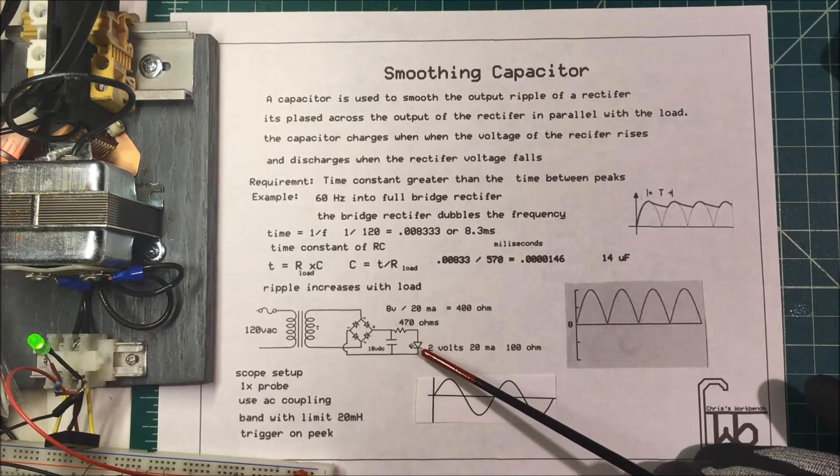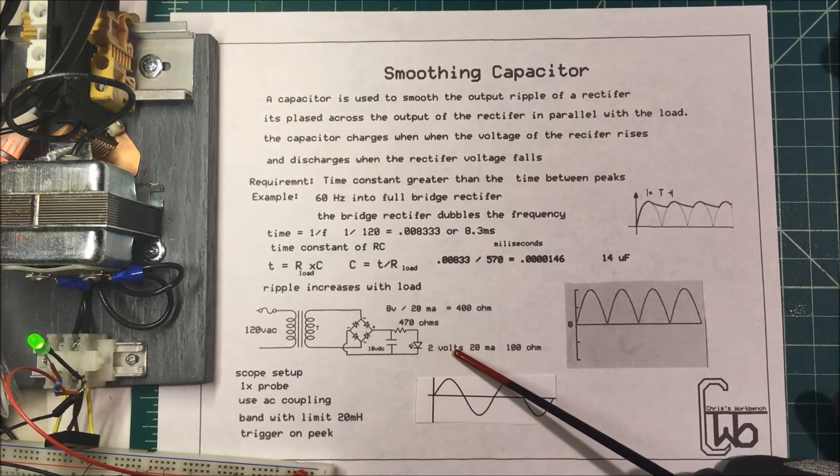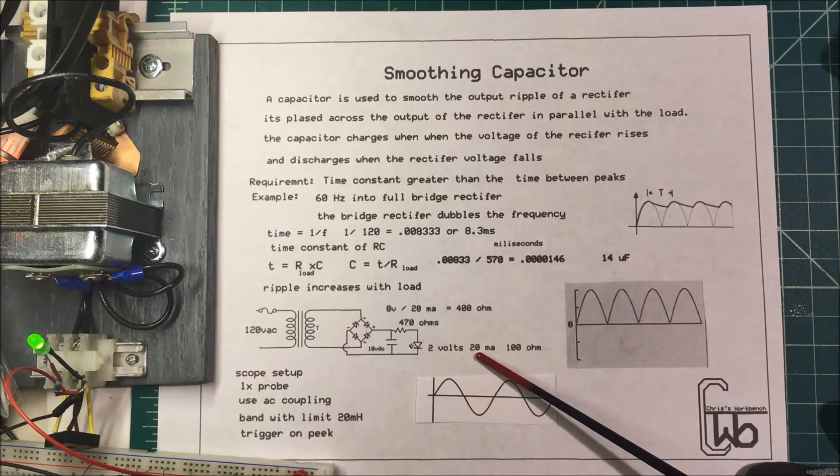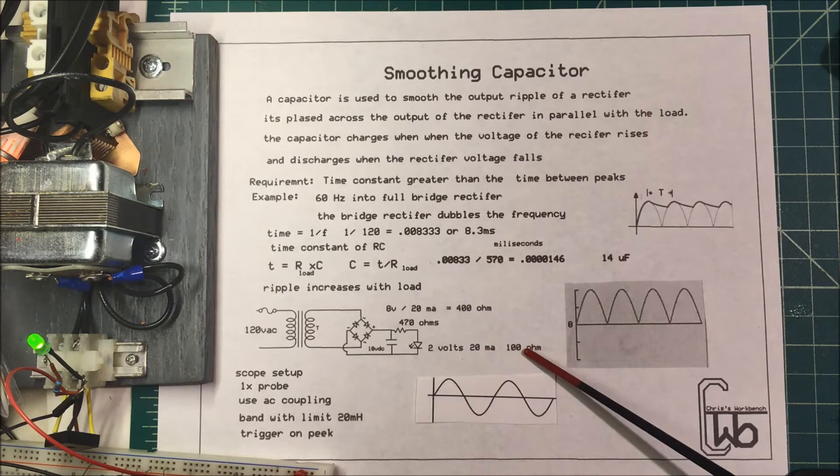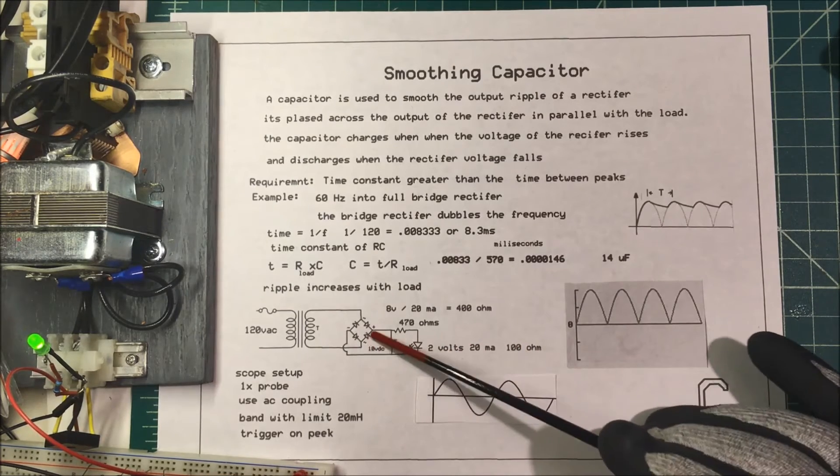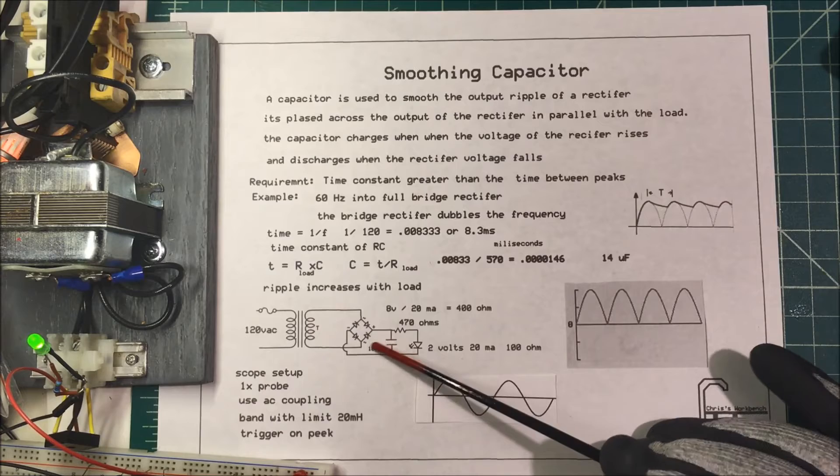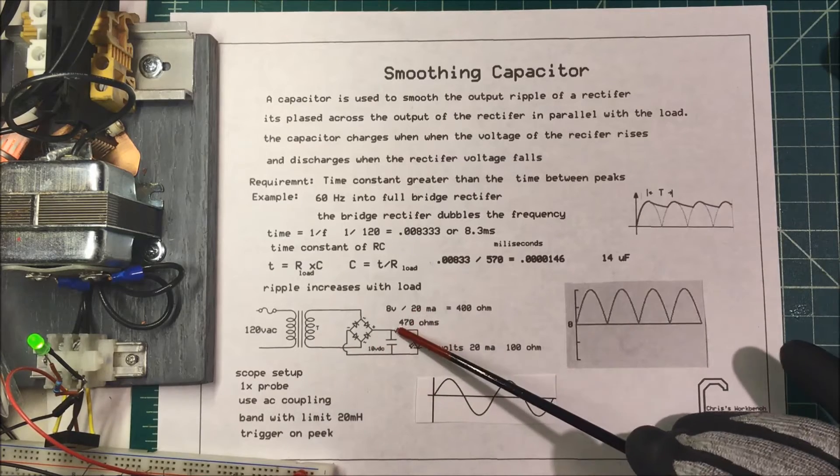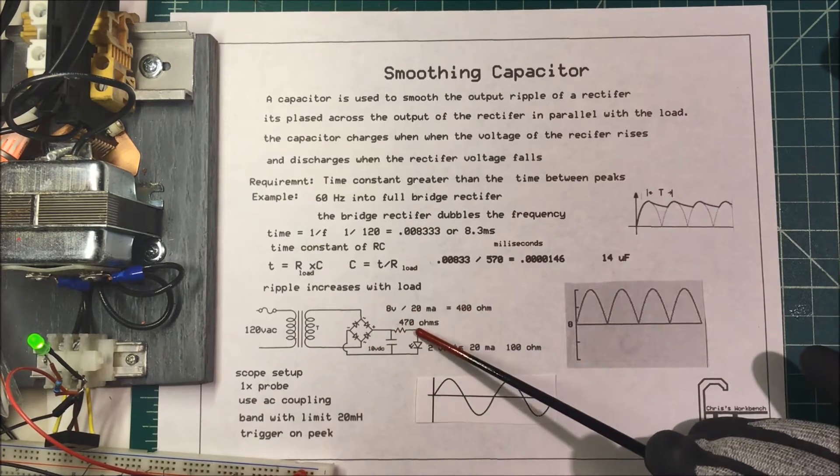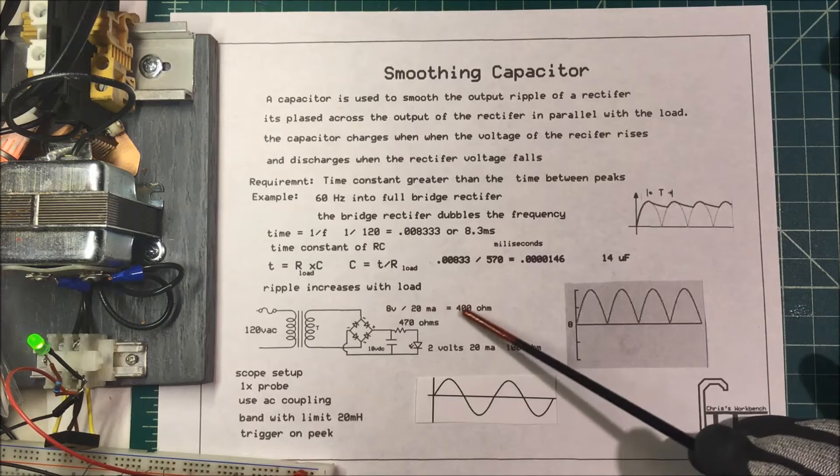In this case I'm using an LED, dropping two volts across it at 20 milliamps. That's about 100 ohms. This is a 10 volt DC output on my rectifier, so I need to drop eight volts across a resistor at 20 milliamps. That's 400 ohms.